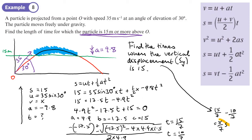So the answer is 5/7 seconds — the time the particle is above 15 meters. This was entirely a vertical calculation. In questions like this, don't assume you have to do both horizontal and vertical. It may be one or the other, sometimes both. Always check the question and see what you've got before diving in.